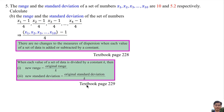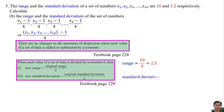Based on textbook page 229, when each value of a data set is divided by a constant k, the new range equals the original range divided by k, and the new standard deviation equals the original standard deviation divided by k. Here k equals 4, so the new range is 10 divided by 4, which equals 2.5, and the new standard deviation is 5.2 divided by 4, which equals 1.3.